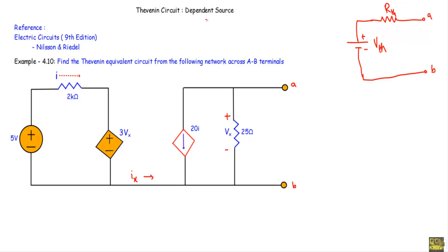When a circuit contains a dependent source, while reducing that circuit into a Thevenin circuit, we use the formula RTH equal to open circuit voltage VTH over short circuit current IN to calculate the Thevenin resistance.